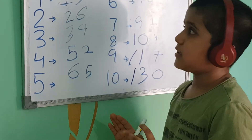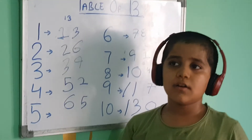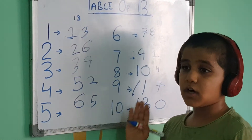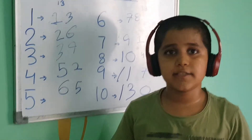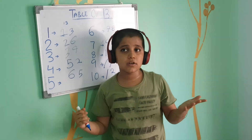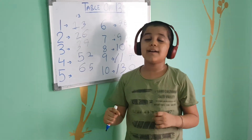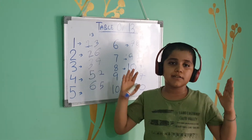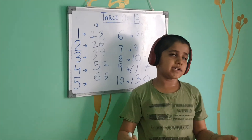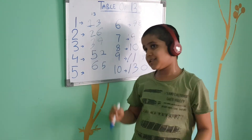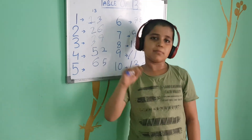This is the table — these are the tricks for the table of 13. You must see my table of 12 tricks video to understand more about these tricks. Thank you. Bye bye.